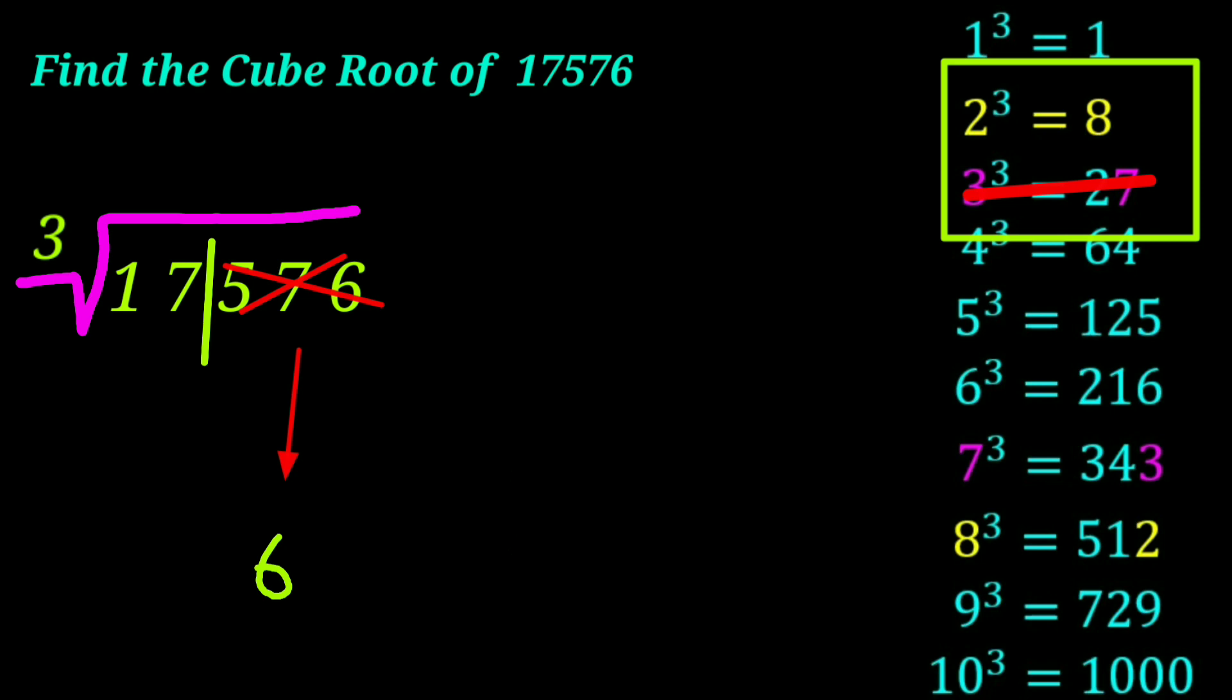The cube root of eight is two. That gives us the other part of our answer which is two. So here we have it. The number together, twenty-six is the cube root of 17,576.